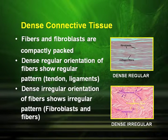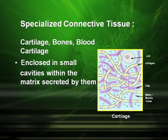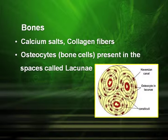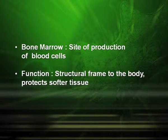Dense irregular orientation shows an irregular pattern found in fibroblasts and fibers. Specialized connective tissue includes cartilage, bones, and blood. Cartilage tissues are enclosed in small cavities within the matrix secreted by them and are found at the tip of the nose and in the external ear. Bones are made up of calcium salts and collagen fibers, composed of bone cells known as osteocytes. The bone marrow is the site of production of blood cells, and bones provide a structural frame to the body and protect softer tissues.